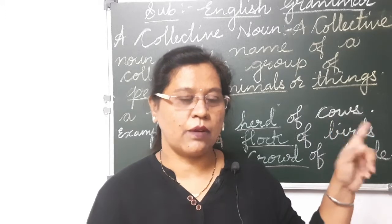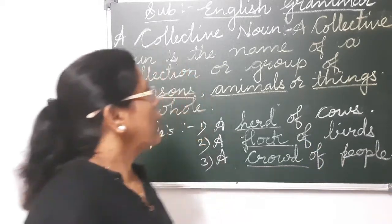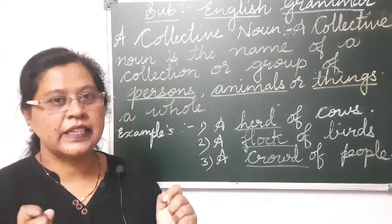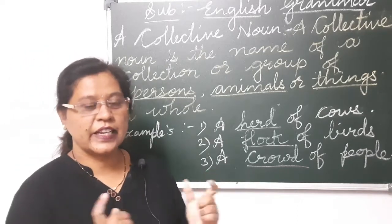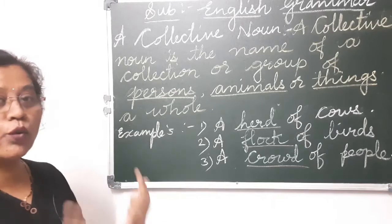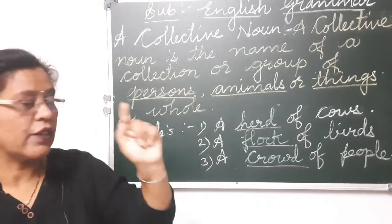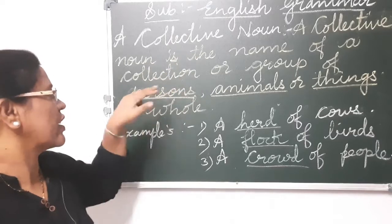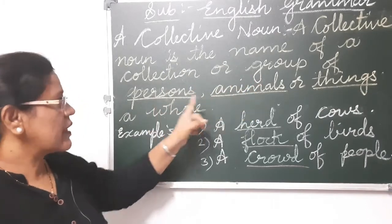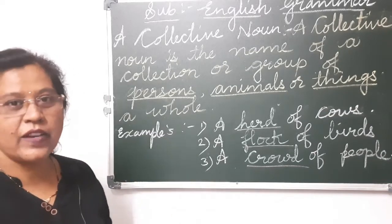In the last video I finished explaining the common noun and the proper noun. Today in this session we are going to learn about collective nouns. The total meaning is in the word 'collection' — a collective noun means a collection, a group of persons, animals, or things as a whole. A collective noun is the name of a collection or group.